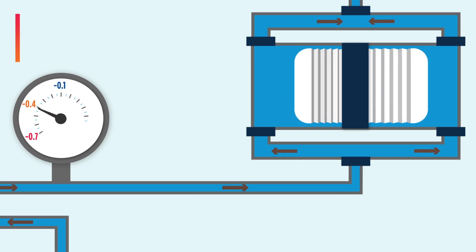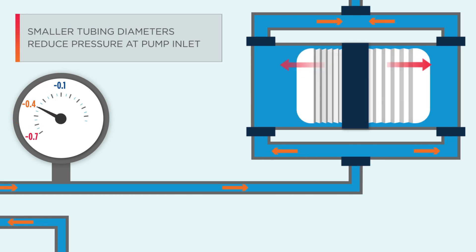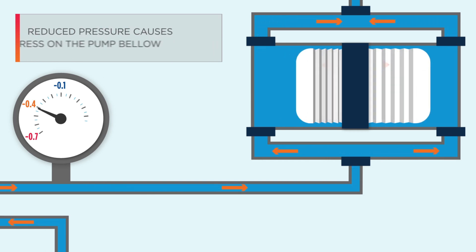As you can see, smaller tubing diameters reduce pressure at the pump's inlet and this dip in pressure begins to stress the pump's bellow.